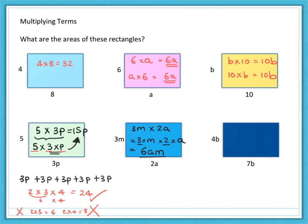Now, that leaves us with the last one, 4b multiplied by 7b. So, 4 times 7 gives us 28. B times b, we don't write that as bb, we write that as b squared. And there is your final answer.